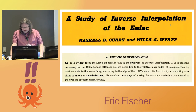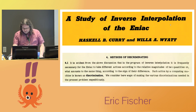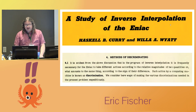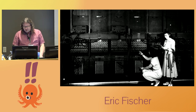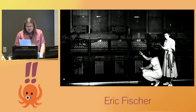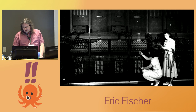In 1946, Haskell Curry and Willow Wyatt wrote a report describing a program to invert a function. They used the name discrimination for the facility of making a decision based on which of two numbers was larger. The ENIAC didn't have an instruction called discriminate, though. It was programmed by wires and dials on plug boards, and the control panel for the instruction that made a decision was connected by physical wires to the instructions that could follow it.